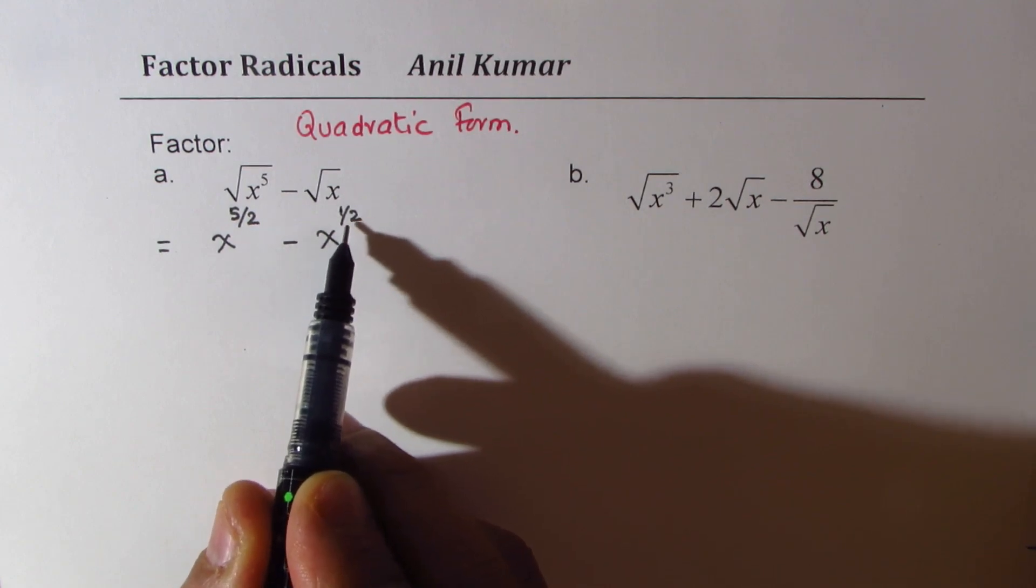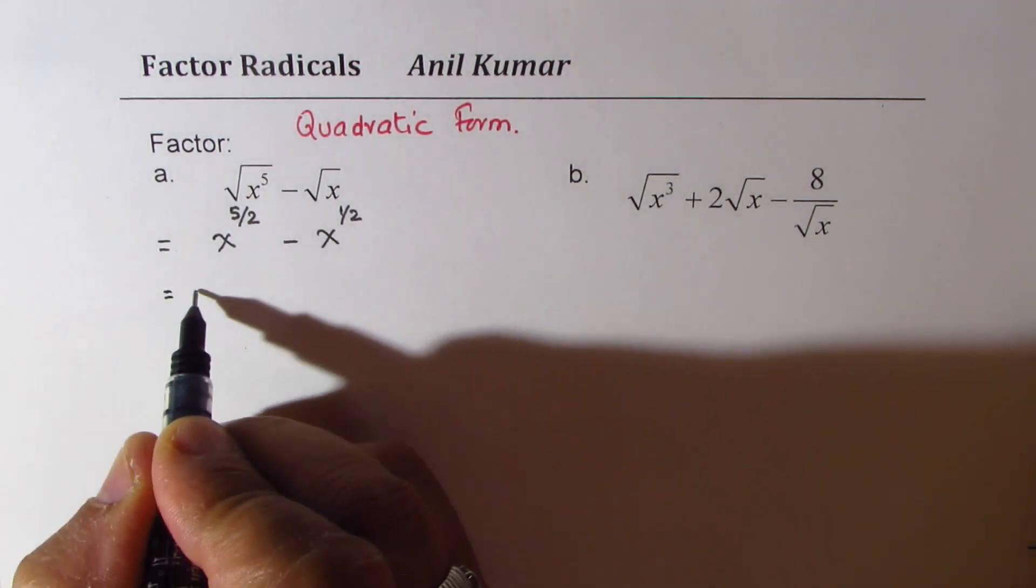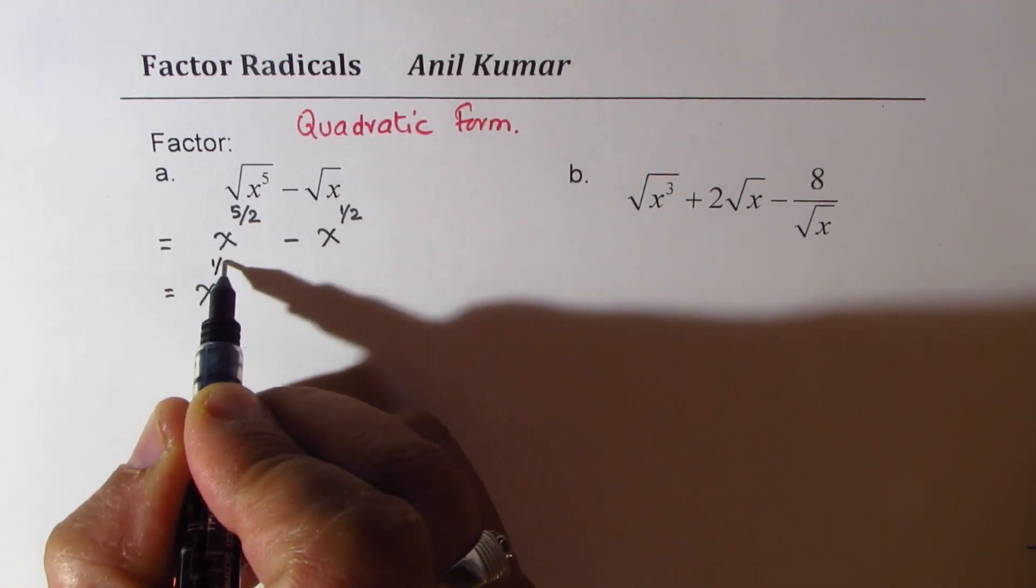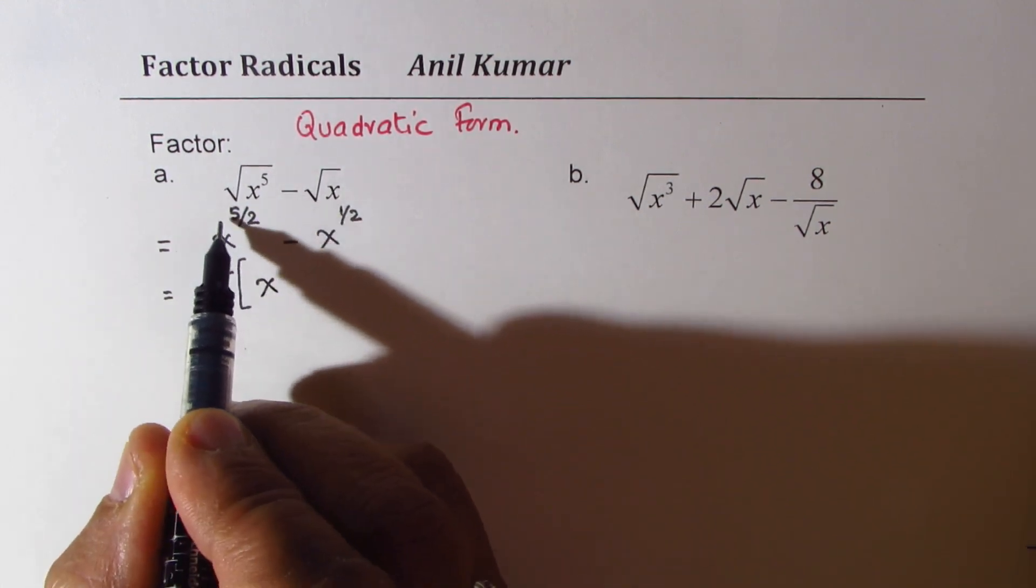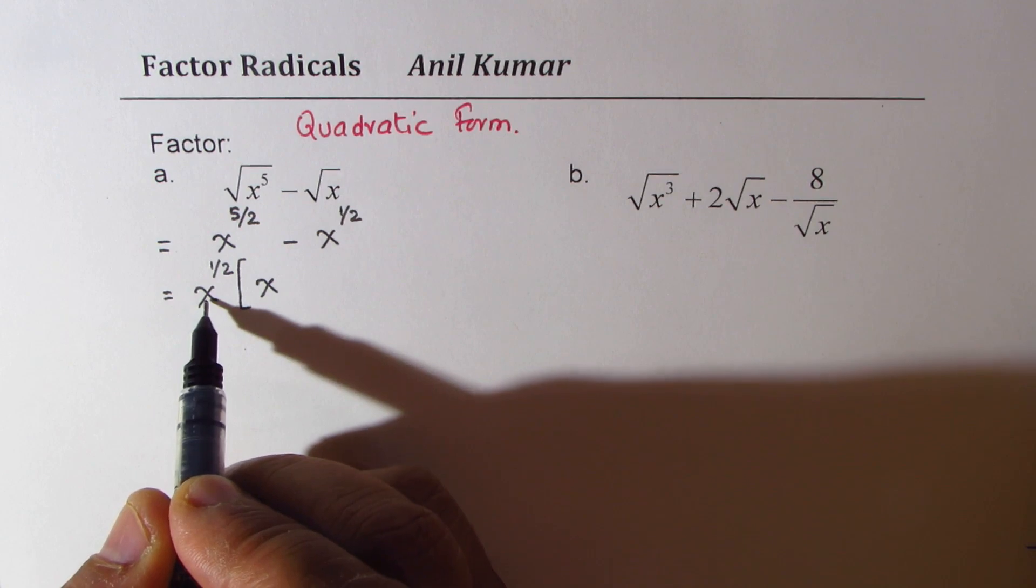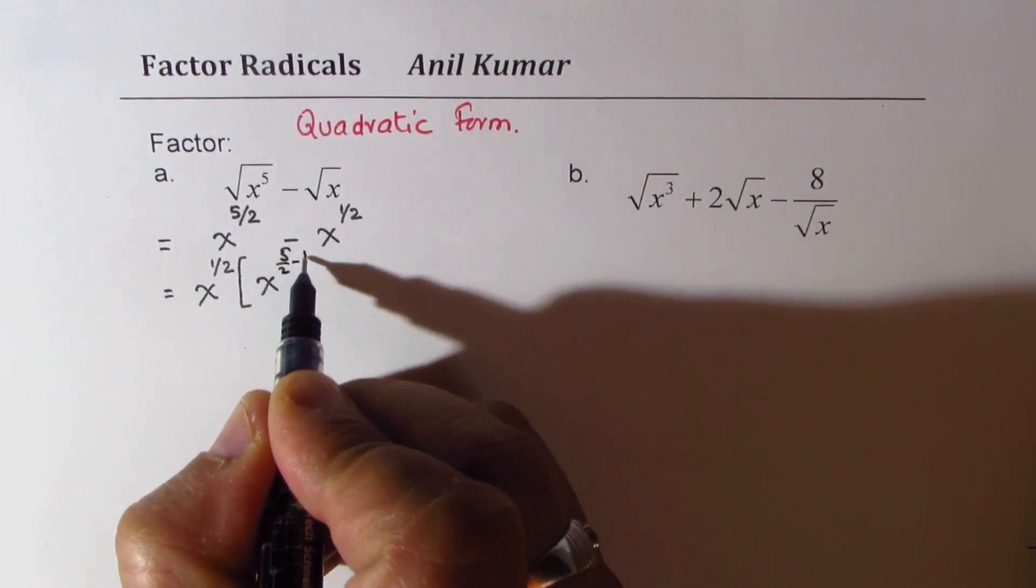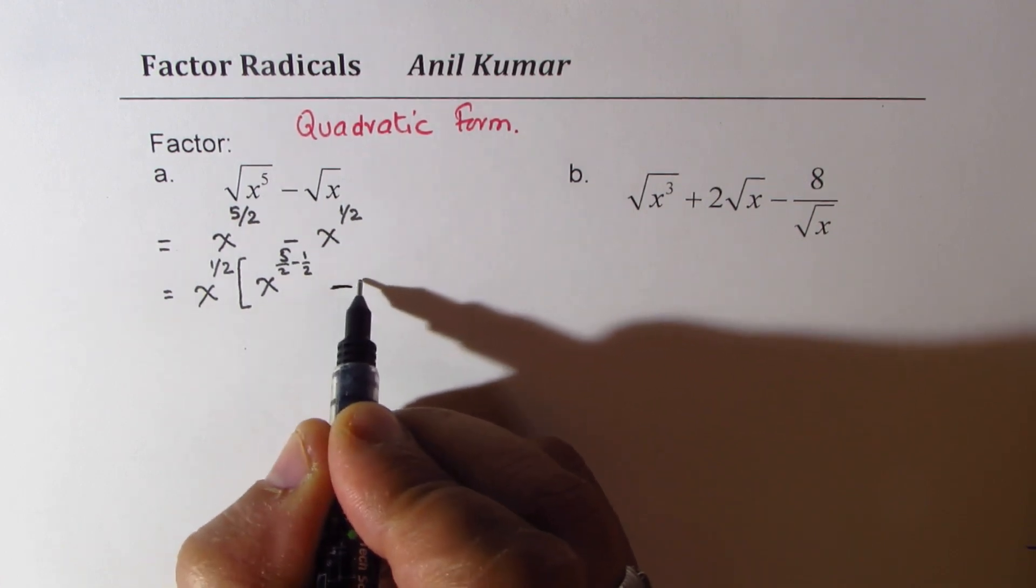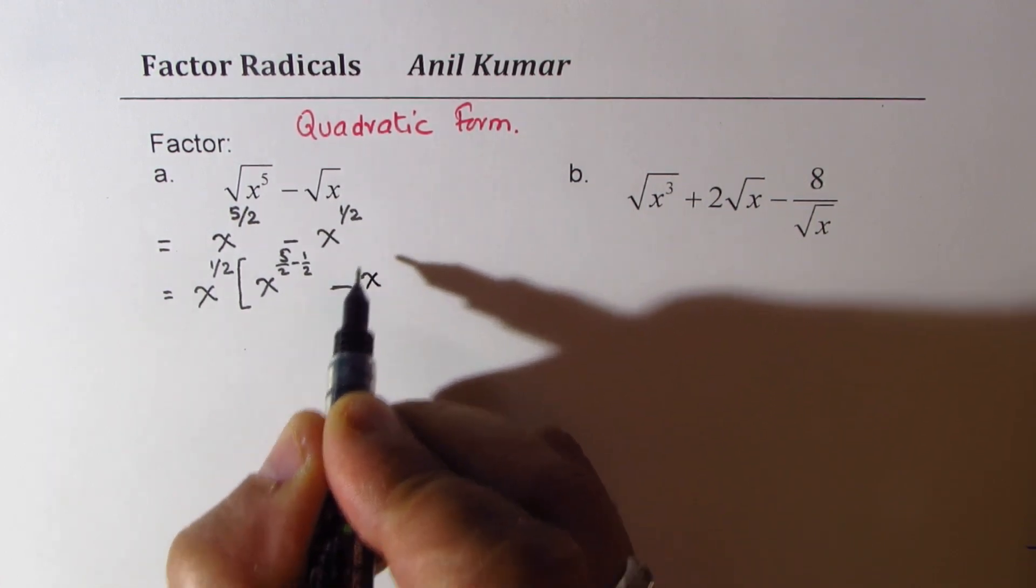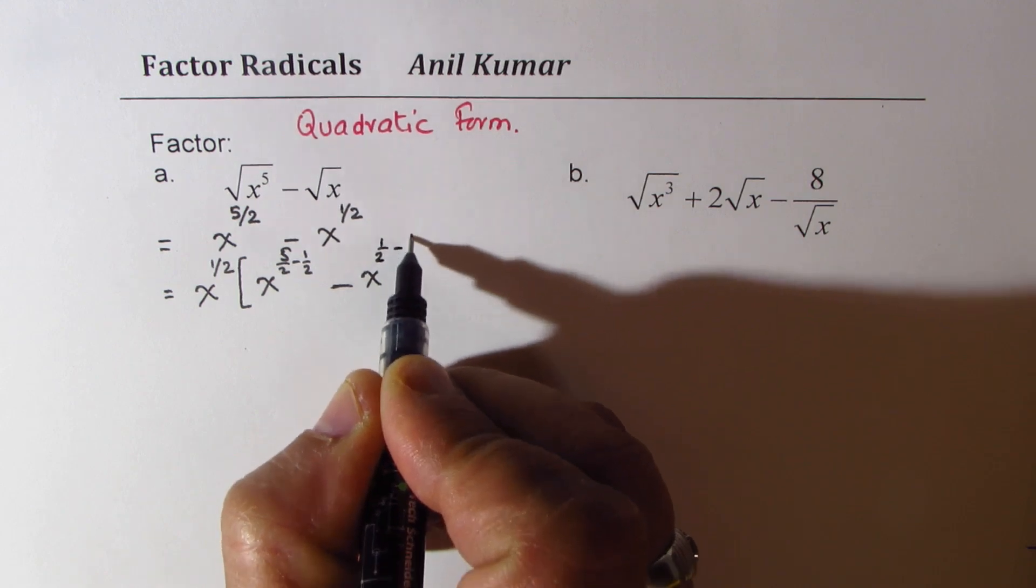Now x to the power of half is lower, so we could factor this. So we could write this as x to the power of half. And within brackets, we get x to the power of 5 over 2 divided by this, that is to say 5 over 2 minus half. Here we get minus x to the power of half minus half.